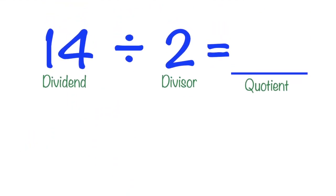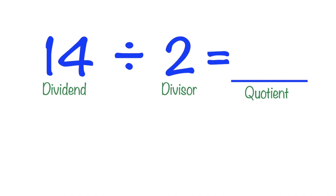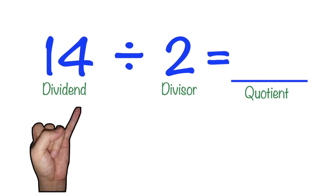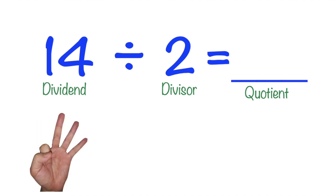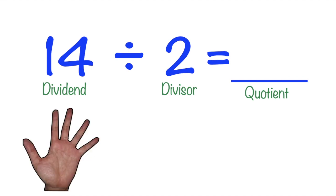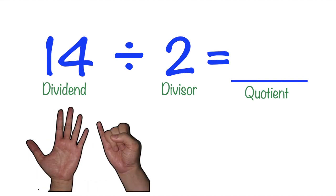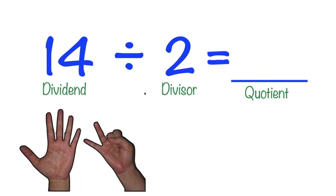How about this: 14 divided by 2 equals blank. Let's skip count by 2 until we reach 14 — 2, 4, 6, 8, 10, 12, 14. The quotient is 7.